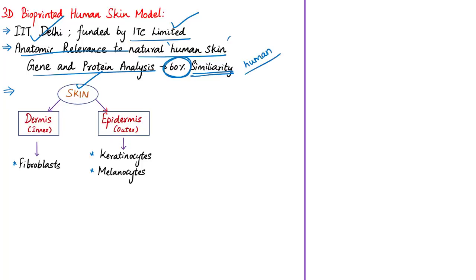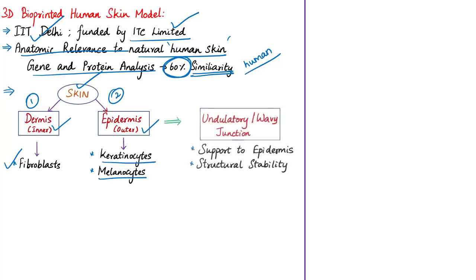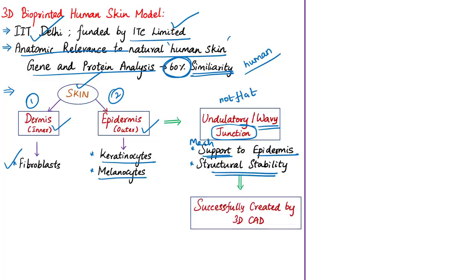The bioprinted skin is composed of two important layers. The inner layer is dermis, made of fibroblast cells, and the outer layer is epidermis, made of keratinocyte cells and melanocyte cells. The junction between these two layers is not flat but undulatory or wavy. This undulatory morphology is important as it provides biochemical indications and mechanical support to the epidermis layer. The wavy structure provides structural stability by keeping the two layers attached and not allowing cells to cross the junction. The IIT team was successful in creating this wavy junction.